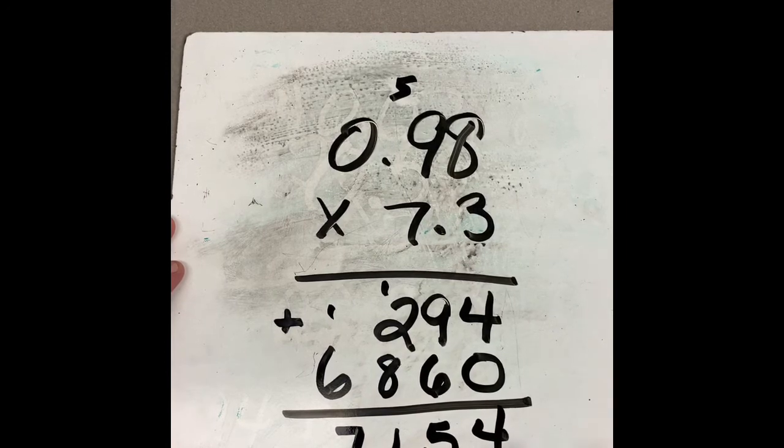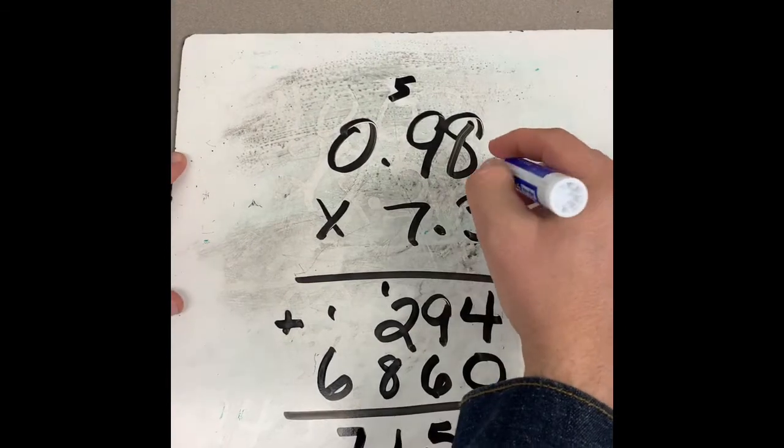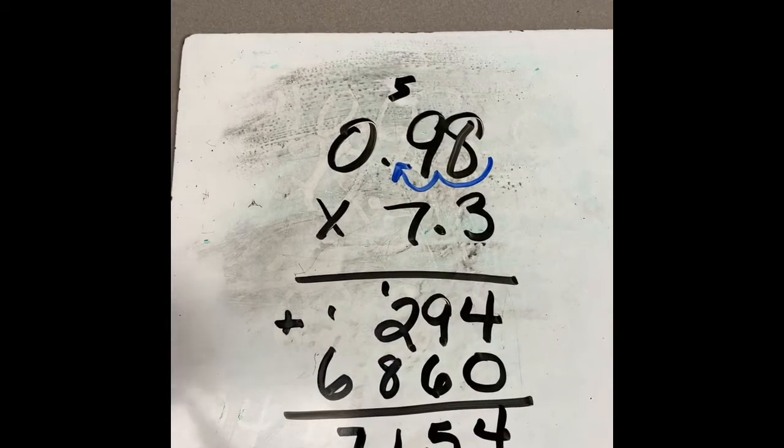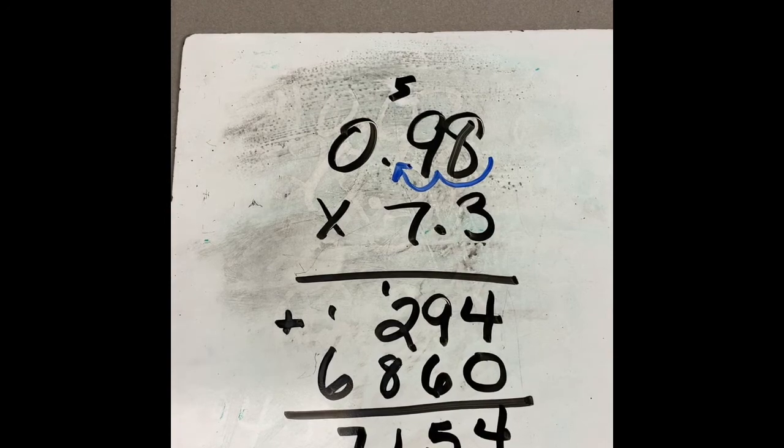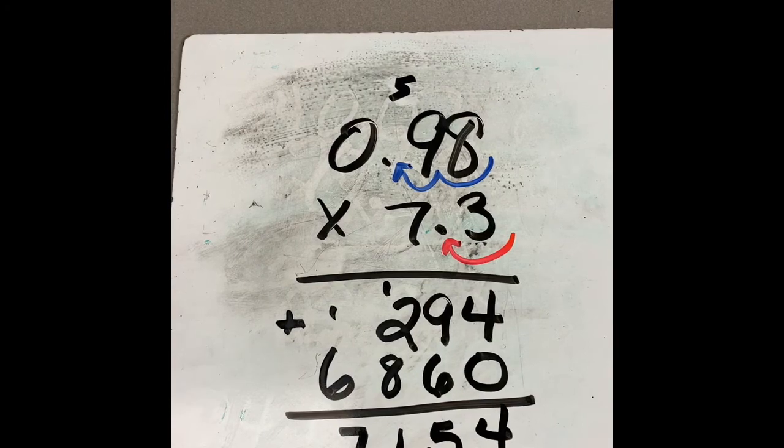Now, I'm almost done, but I have to deal with my decimal points now. So up here in my question, I'm going to go over one, two. So I've got two spots there that I have to deal with, and I have, let's see, one spot with this number that I have to deal with. So now I have to add those decimal points into my answer.